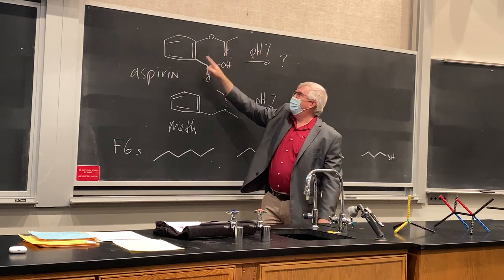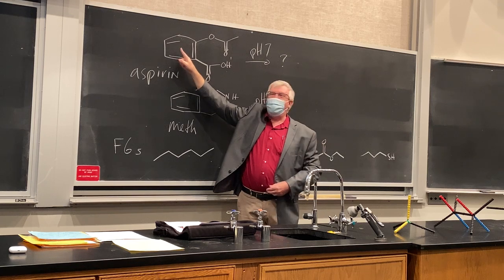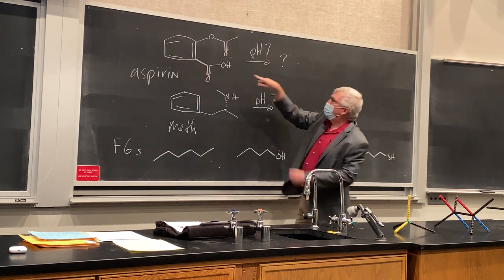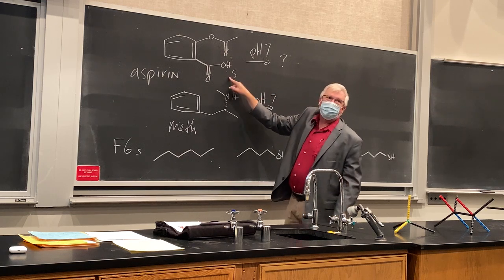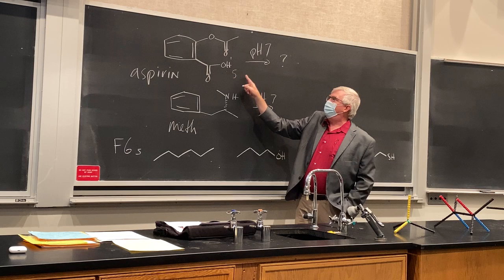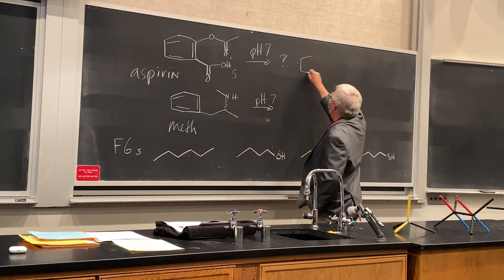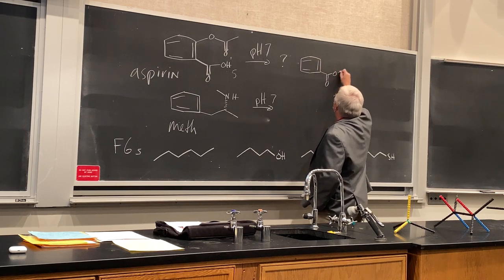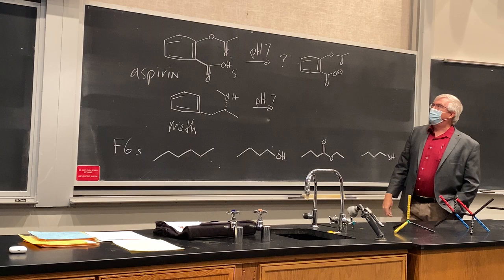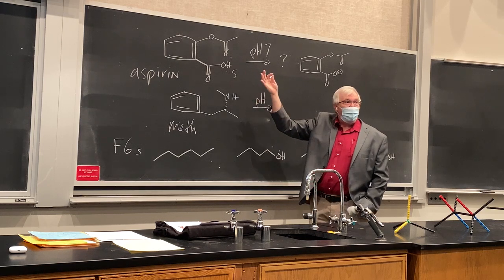There are actually three functional groups in aspirin. We know this one — carboxylic acid. What's this one up here? Ester — yes, ester. And how about this one over here? Benzene, or aromatic, or arene — we'll take any answer for that. If it's a ring of pi bonds, it's aromatic. So at pH 7, do we know the pKa of any of these functional groups? Yes — 5 for the carboxylic acid.